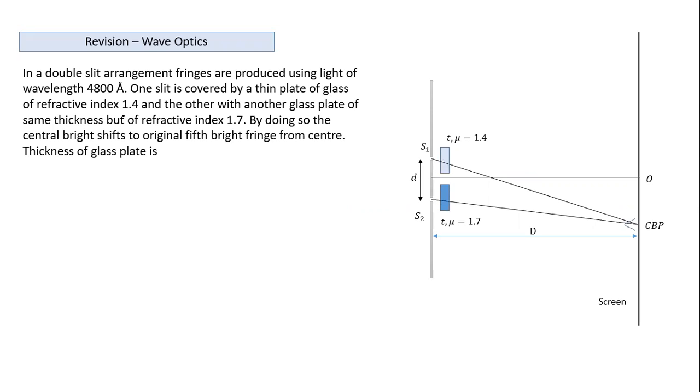Using monochromatic light with given wavelength, the two different sheets both have the same thickness t, but different refractive indices: mu is 1.4 for one and 1.7 for the other. The question is, can we infer which side the central bright fringe will shift?